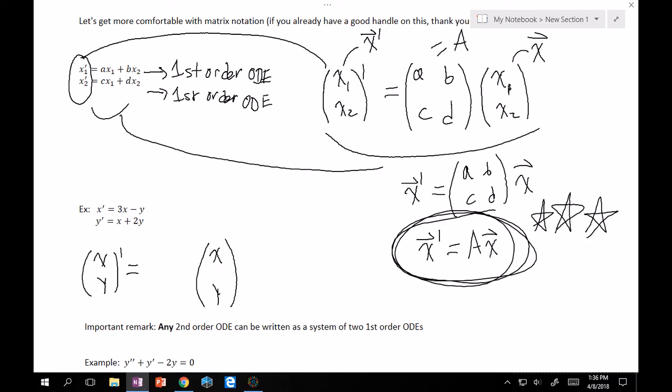And then in here I'll have a 3 minus 1, and a 1, and a 2, right? And that should work, because if you multiply this one, like this 3 and this negative 1, onto here, and then onto here, you get exactly this top equation. And the same thing with the other y prime equation.